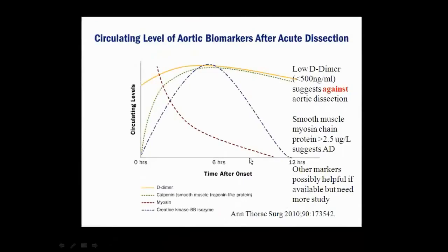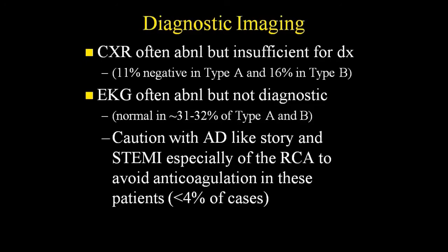Regarding biomarkers: a low D-dimer argues against dissection. It's not perfect, but a D-dimer under 500 makes aortic dissection very unlikely. There are other markers people have investigated, like calcitonin, but they're not clinically available or helpful. Your clinical reasoning is going to be more important than biomarkers.